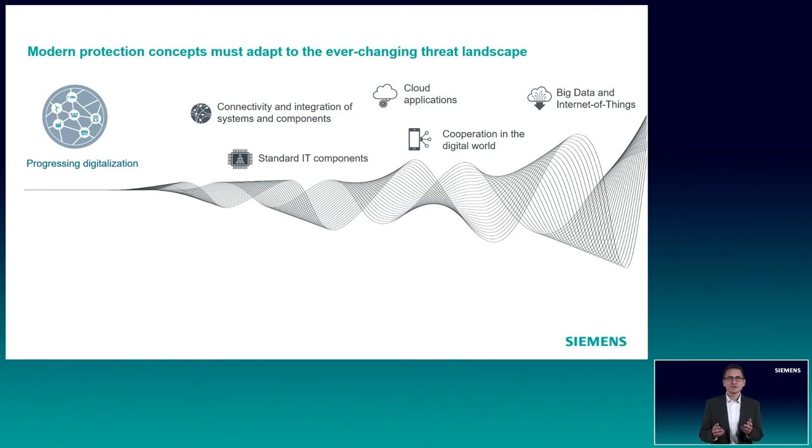We also see OT environments connected with cloud applications. Remote access from outside protected networks is already a common use case. And of course, big data and the IoT are becoming part of our domain. These trends provide greater flexibility to the operators, but they can also increase the attack surface of energy automation systems if they are not properly implemented.